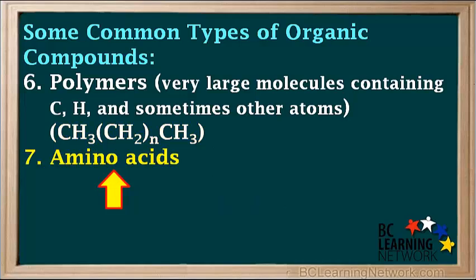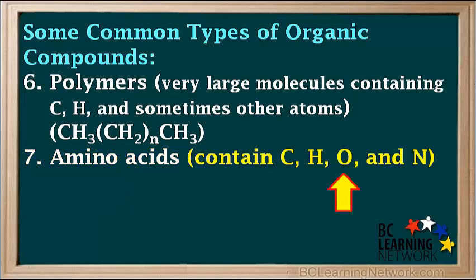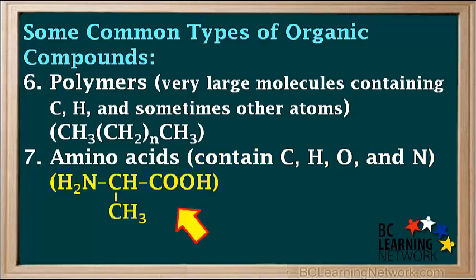A seventh type of organic compound is amino acids. Amino acids contain carbon, hydrogen, oxygen, and nitrogen atoms. One example is alanine, shown by the structural formula here.